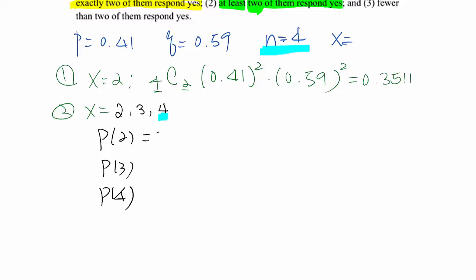You know P(2) already, which is 0.3511. So P(3) will be 4C3 times 0.41 to the third power times 0.59. And P(4) will be 4C4 times 0.41 to the fourth power times 0.59 to the zero power.